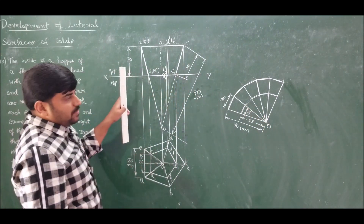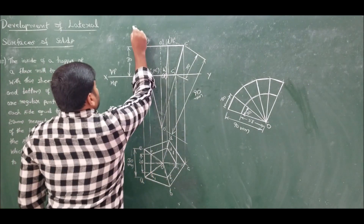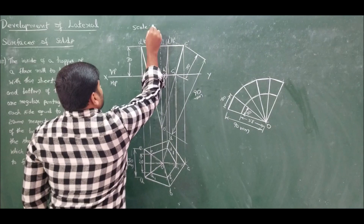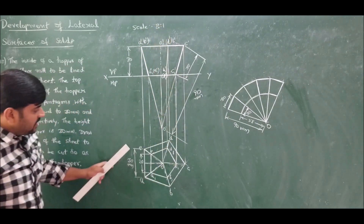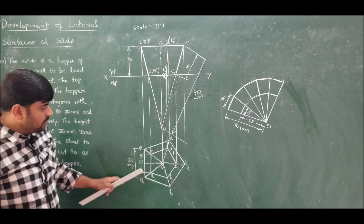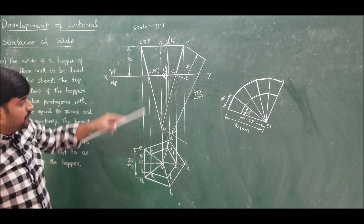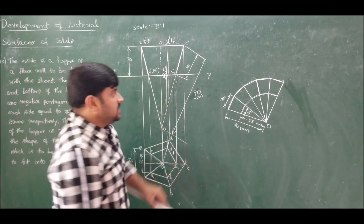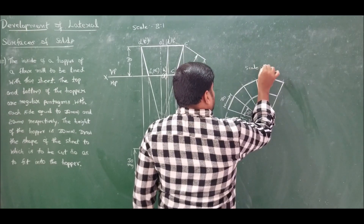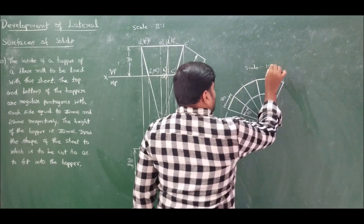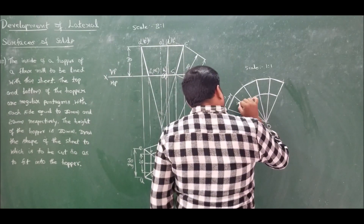The dimensions appear larger because the front view and top view were drawn at a scale of 2:1 (30 mm drawn as 60 mm, 20 mm drawn as 40 mm), whereas the development itself is drawn at a scale of 1:1. This is the required development of the hopper.